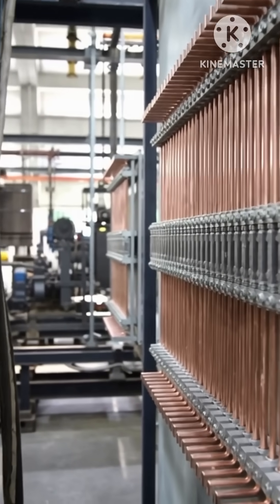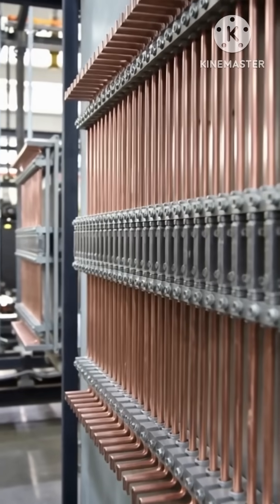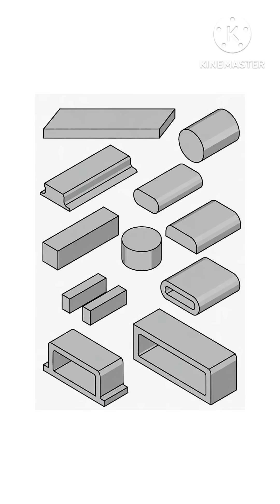Copper offers better conductivity, while aluminum is lighter and more cost-effective. Busbars come in different shapes and designs — flat, round, rigid, flexible, bare, and insulated — and types are selected based on system requirements.